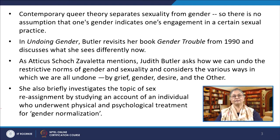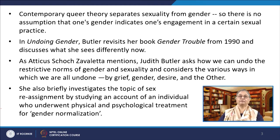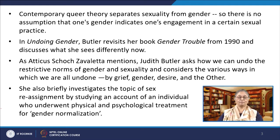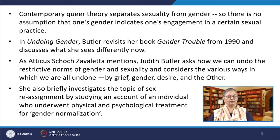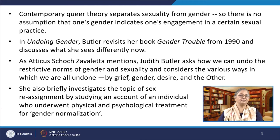As Atticus Zawaleta has mentioned in a review, Judith Butler asks how we can be undone by the restrictive norms of gender and sexuality and considers various ways in which we are all undone by grief, by gender, by desire and the other. Butler briefly investigates the topic of sex reassignment by studying an account of an individual who had to undergo physical and psychological treatment for what is more commonly known as gender normalization.